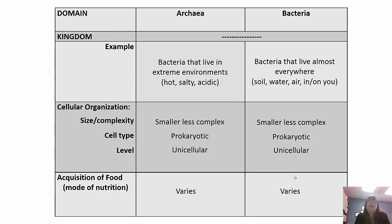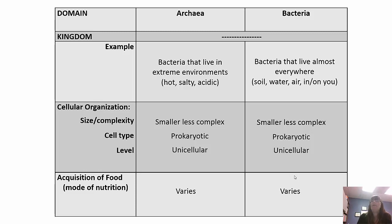Archaea are bacteria that live in extreme environments — very hot, very salty, or very acidic. Bacteria live almost everywhere. Examples of bacteria include E. coli, Staphylococcus aureus, and Streptococcus. Both archaea and bacteria are prokaryotic and unicellular, and how they get their food varies.